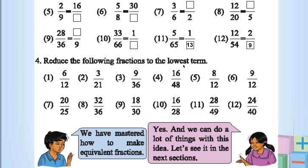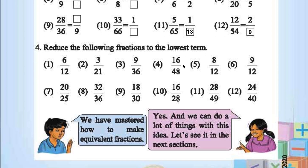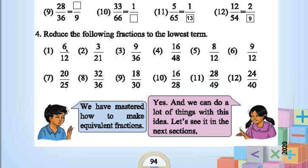Reduce the following fractions to the lowest term. 6 ones are 6, 6 twos are 12 — so this is 1 by 2. 3 sevens are 21 — this is 1 by 7. 9 fours are 36 — it is 1 by 4. 16 threes are 48 — so it is 1 by 3. Last one: 4 sixes are 24, 8 threes are 24, and 8 fives are 40 — so it is 3 by 5.